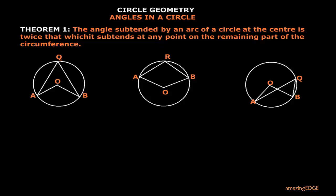In this math lesson, we'll be looking at the angles in a circle. We want to look at theorems that are associated with the angles in a circle. Starting with Theorem 1: the angle subtended by an arc of a circle at the center is twice that which it subtends at any point on the remaining part of the circumference.